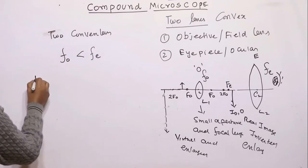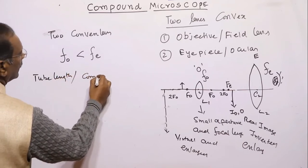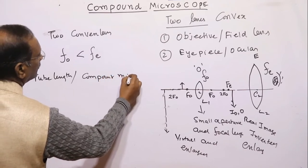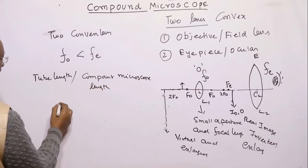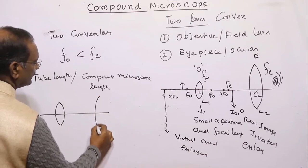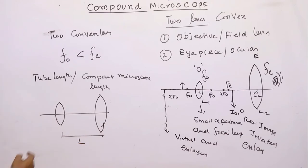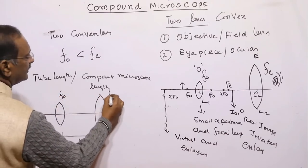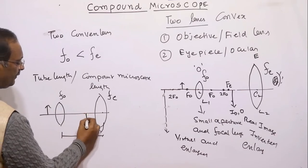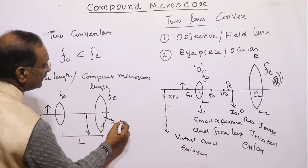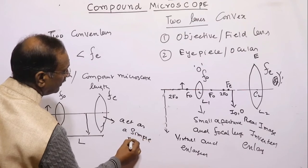What is tube length? The tube length of the compound microscope is the distance between the two lenses, called tube length L. The object is kept in front of the objective, its enlarged image is formed, and the eyepiece further enlarges this image, behaving as a simple microscope.